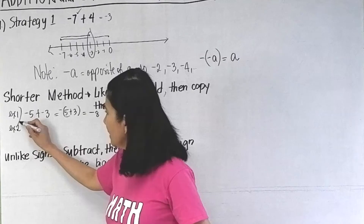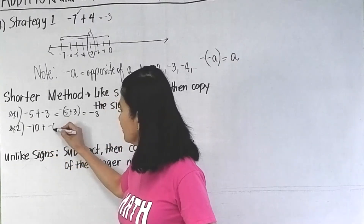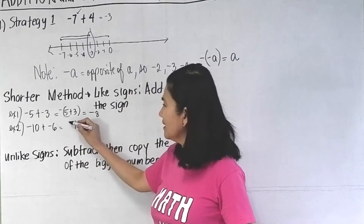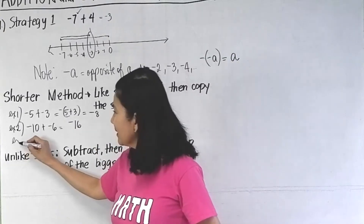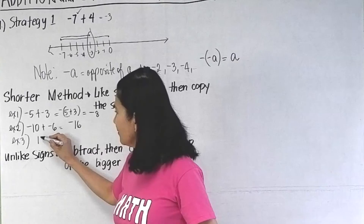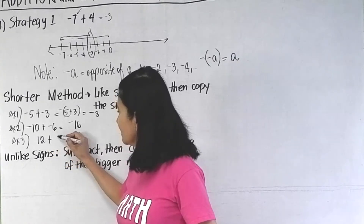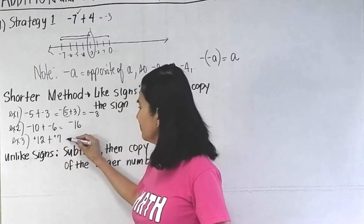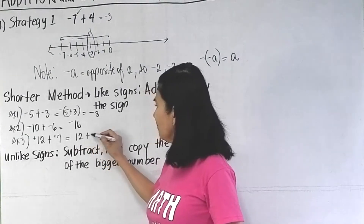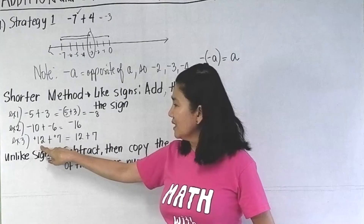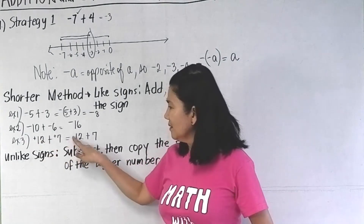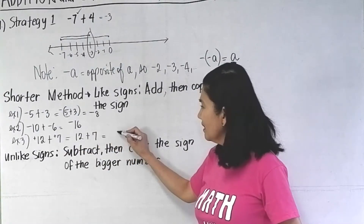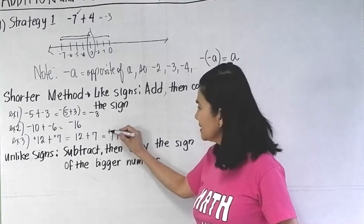Then copy the sign — so the answer is negative 8. For the third example, what if we have positive 12 plus 7? If you write positive 12 plus positive 7, it's the same as writing 12 plus 7. Take note that if there is no sign before the number, it is understood to be positive. Just add 12 plus 7, then copy the sign.